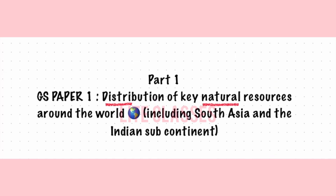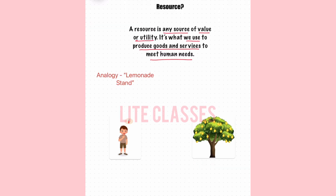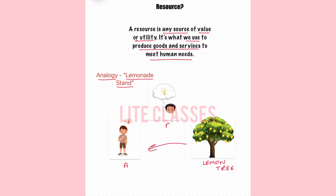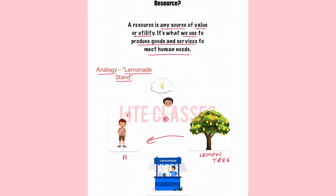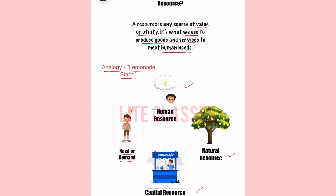First we're going to start with the distribution of key natural resources. A resource is any source of value or utility — in other words, it's what we use to produce goods and services to meet human needs. To understand this through a simple analogy: suppose person A is thirsty. In a nearby garden there is a lemon tree, which is not of much use on its own. Another person picks up the lemons, squeezes them, adds sugar and water, and makes lemonade. Person A gets a refreshing drink and the other person earns money. In this analogy, the lemons represent natural resources, the process of converting them into lemonade represents human resources, and the stand, juicer, and glass represent capital resources.